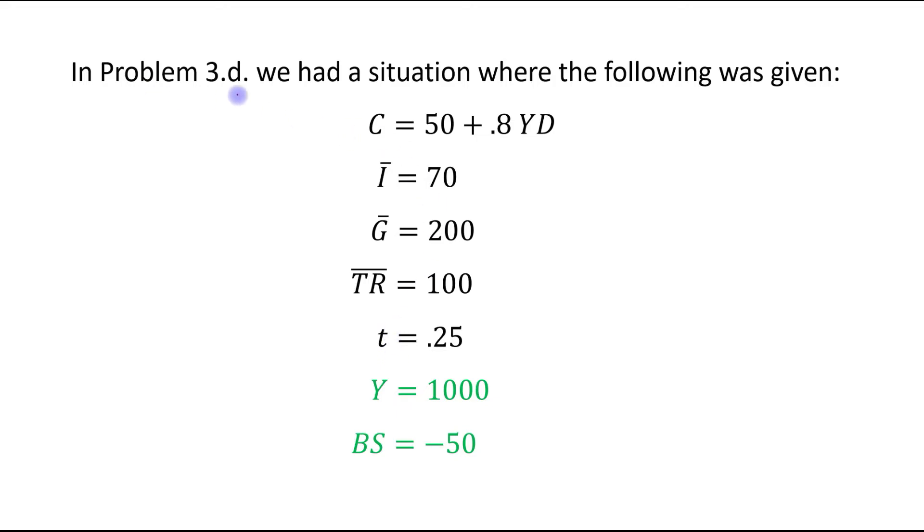In problem 3D we had a situation where the following was given: consumption function C = 50 + 0.8YD, investment I = 70, government purchases G = 200, transfer payments TR = 100, tax rate t = 0.25, equilibrium level of income Y = 1000, and budget surplus BS = -50.